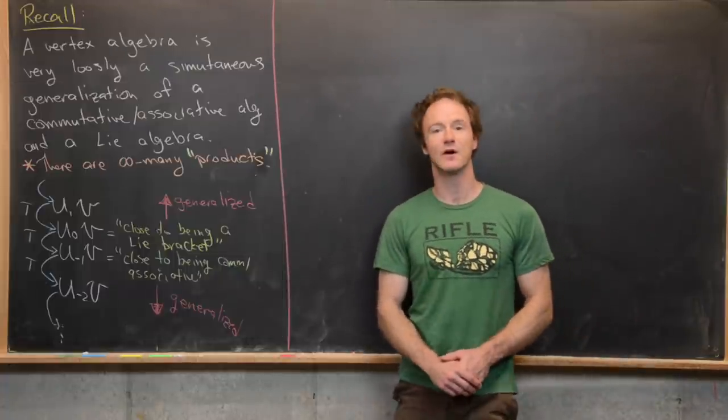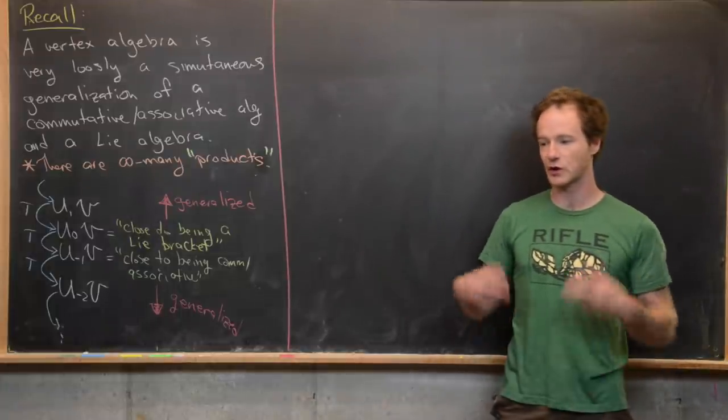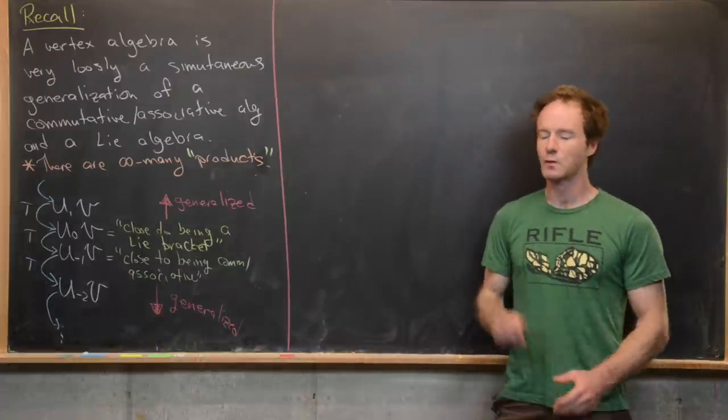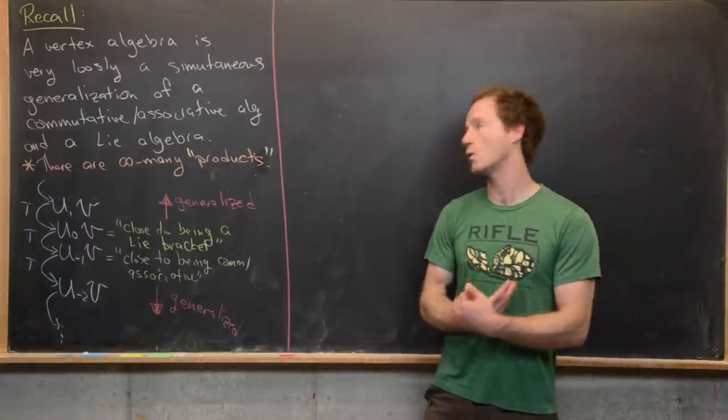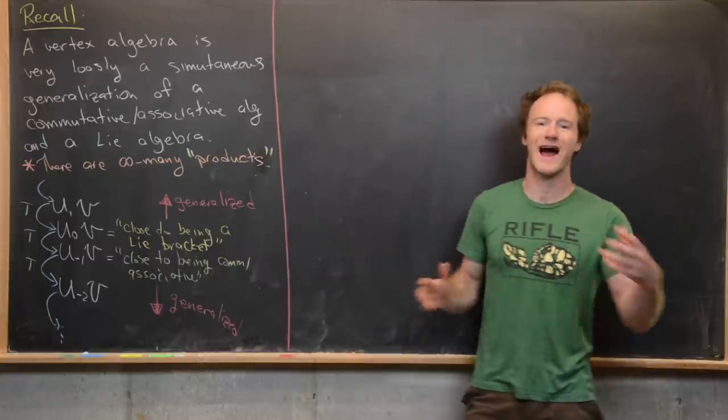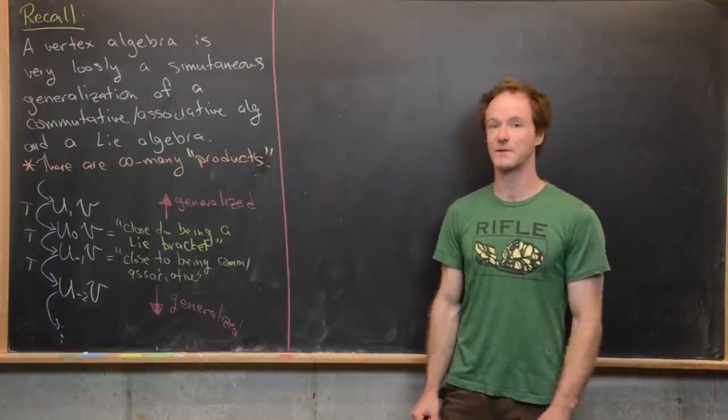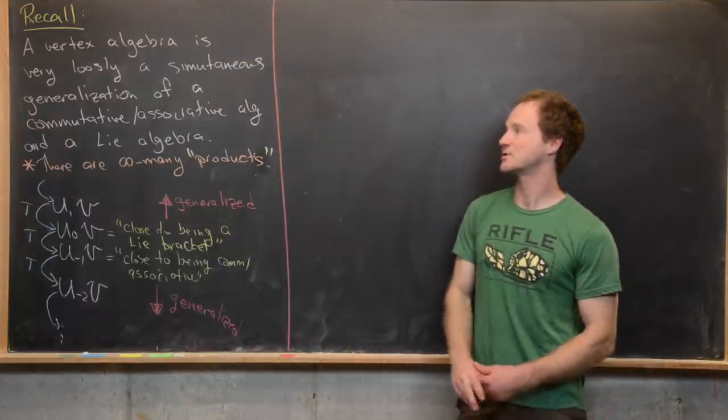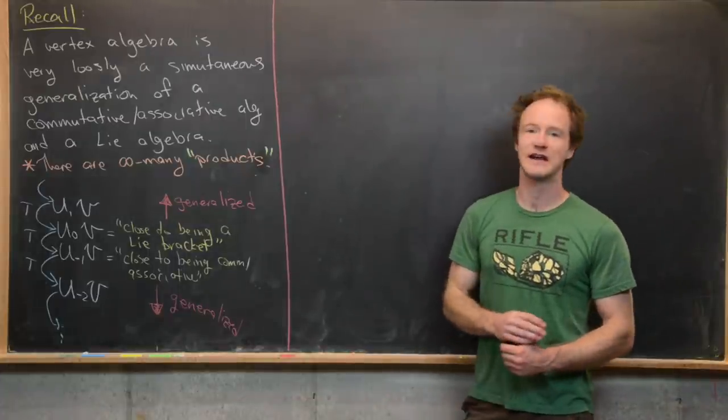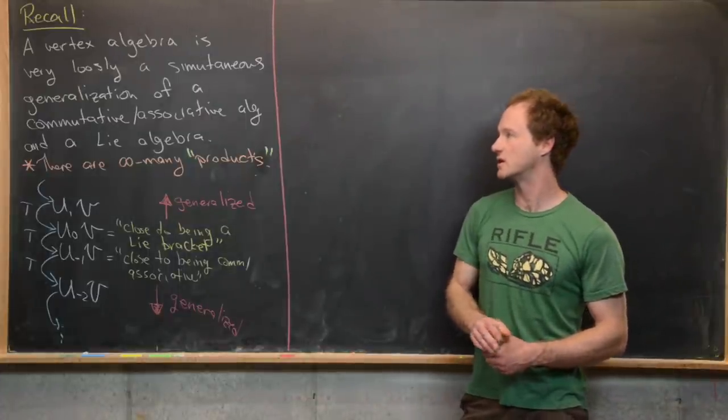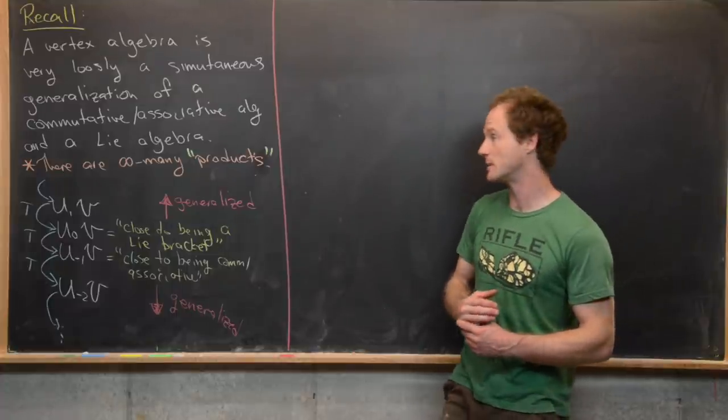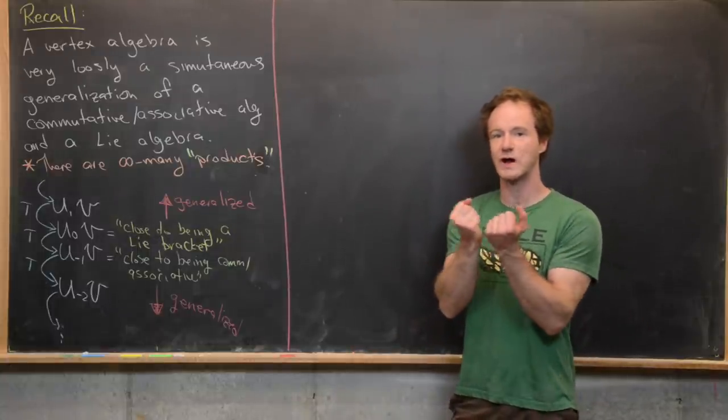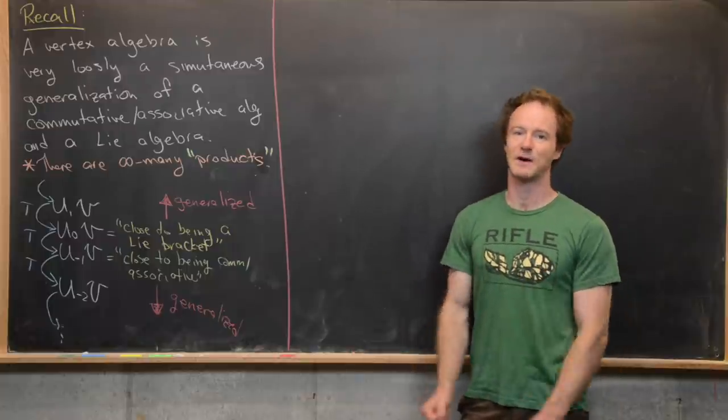Okay, so now in this video we want to talk about the why of vertex algebras. So they're quite complicated. Why would someone define these to exist in the first place? We're going to look at a couple of reasons, but before we do that I want to recall what our loose idea of a vertex algebra was from the last video. A vertex algebra is very loosely a simultaneous generalization of a commutative associative algebra and a Lie algebra. And so let's recall that there are infinitely many ways to take the product of two elements and those are indexed by the integers.